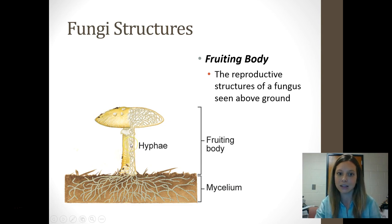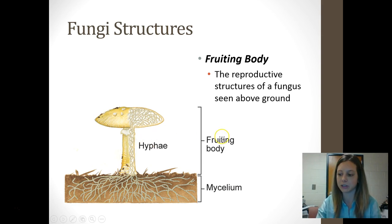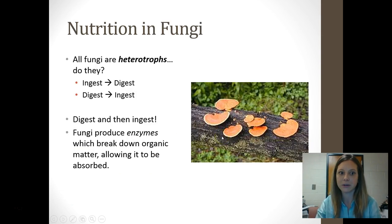The part of the fungus you are used to seeing is called the fruiting body, which is only used for reproduction — it only pops up when conditions are good. The main portion of the fungus is the thread-like mass underground called mycelium, and within the fruiting body you have the hyphae filaments. Pause and label that picture on your notes organizer.